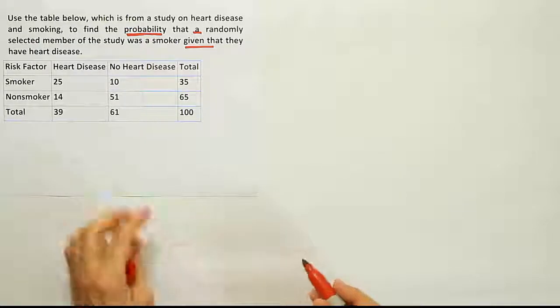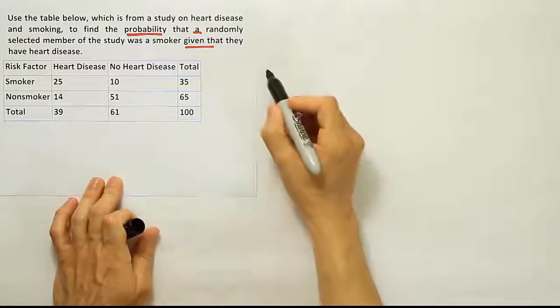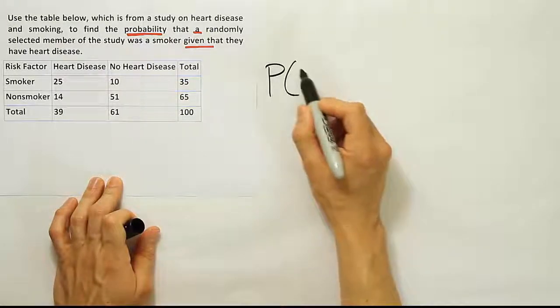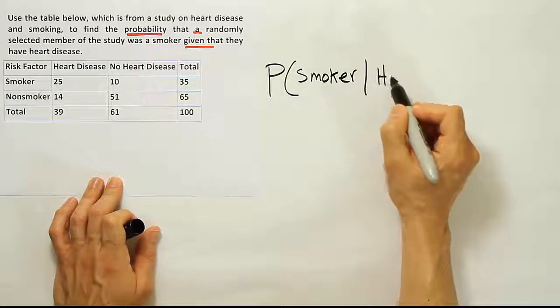So this problem reads the probability that the subject was a smoker given that they have heart disease. Let's write that down: probability of smoker given heart disease.